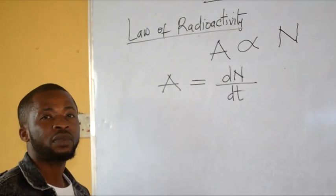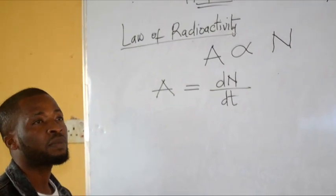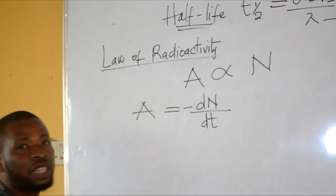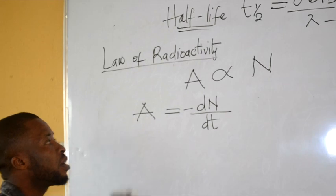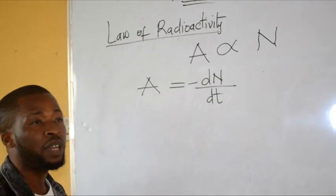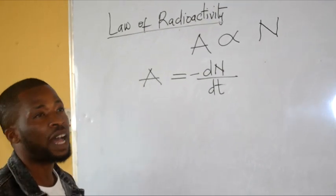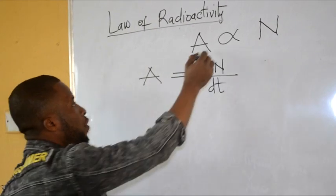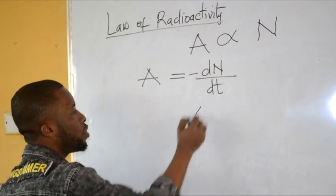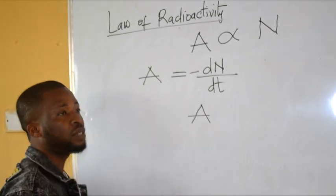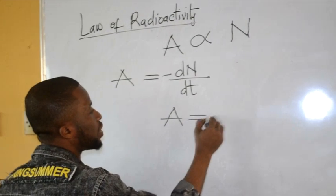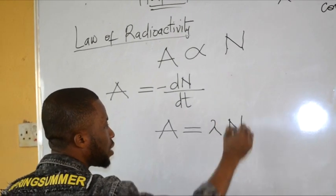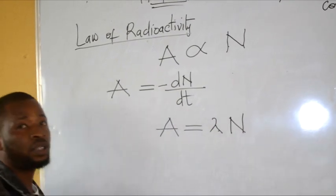When a radioactive substance undergoes disintegration, that change is a negative change because it is expected that the final quantity of the material left would be lesser in number. So from here, if we remove the proportional sign, we are going to introduce a constant, and that constant gives us lambda, the decay constant.